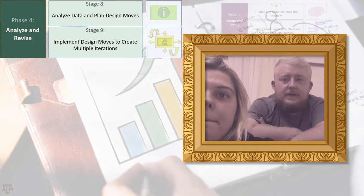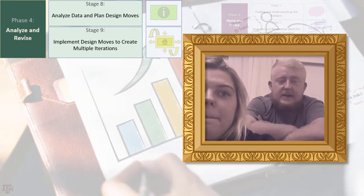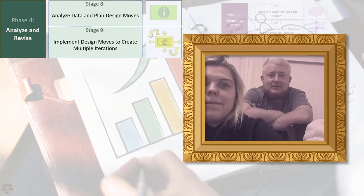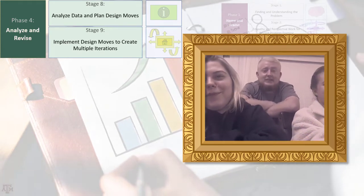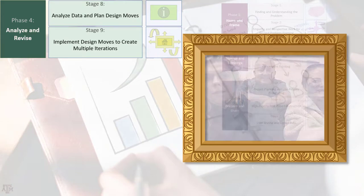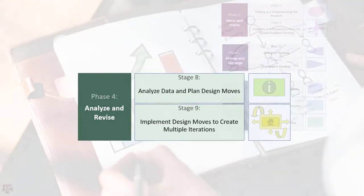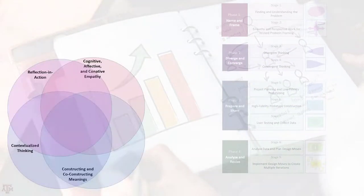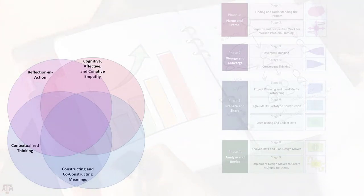A student shares: 'Out of the four phases, this is probably my favorite because now we get into the details of how we're actually going to impact Texas 4-H youth.' In this phase, the designerly ways of knowing most clearly present are reflection in action, contextualized thinking, constructing and co-constructing meanings, and cognitive and affective empathy.